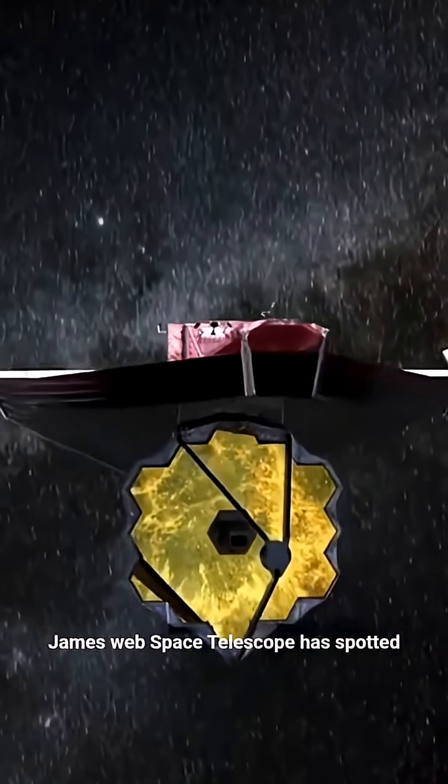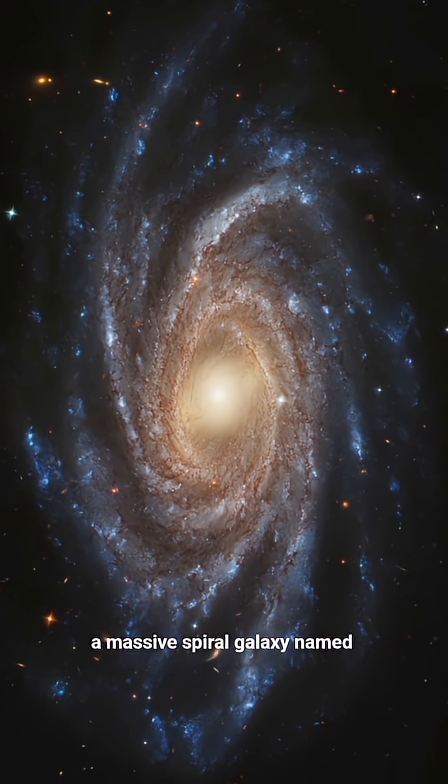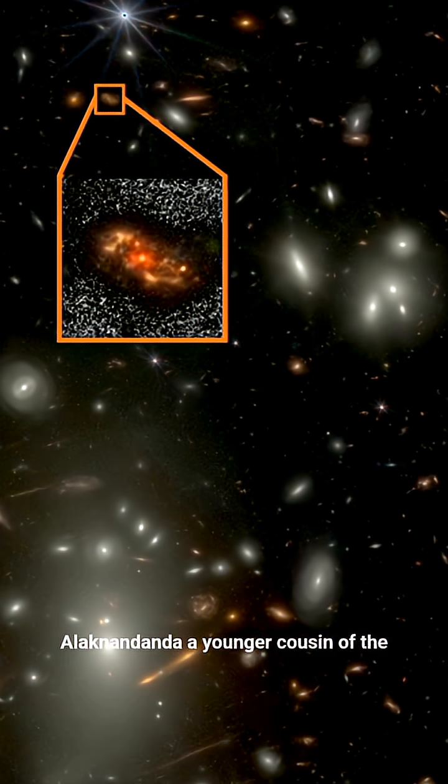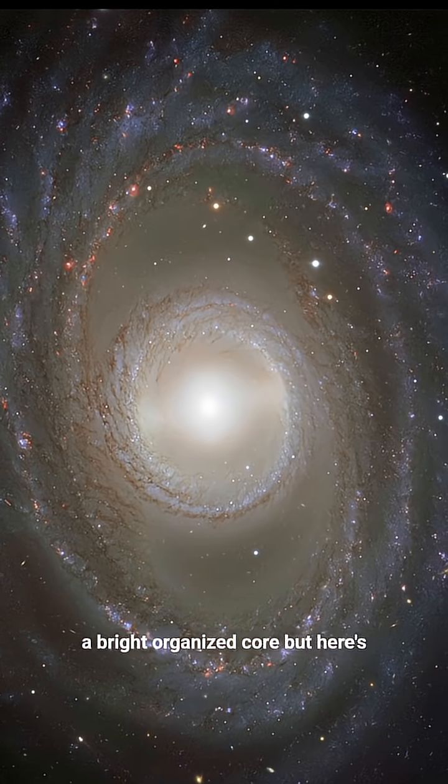The James Webb Space Telescope has spotted a massive spiral galaxy named Alec Nanda, a younger cousin of the Milky Way, with sweeping arms and a bright, organized core.